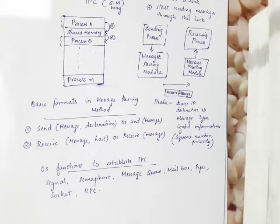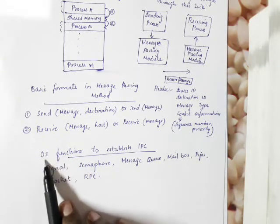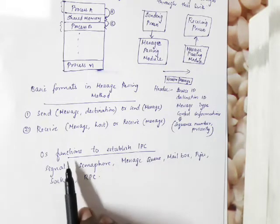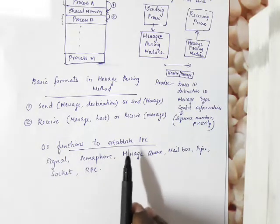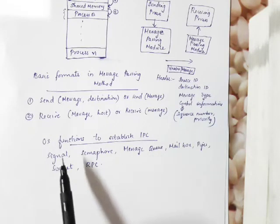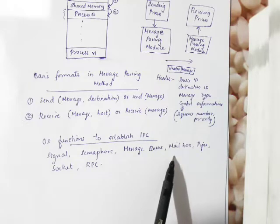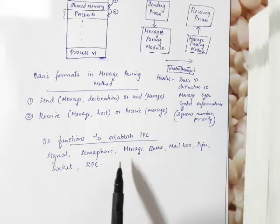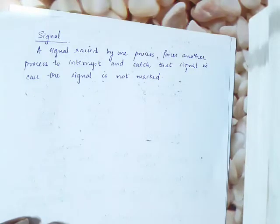In this class, we are going to see what are the functions provided by the operating system to establish the inter-process communication. The main functions are signal, semaphore, message queue, mailbox, pipe, socket, and RPC. Let's start with signal.